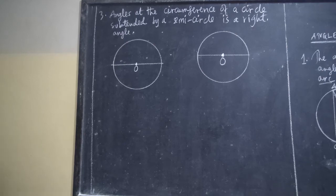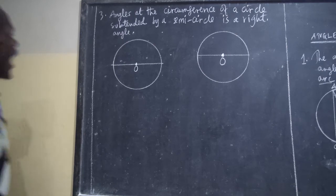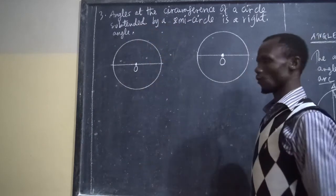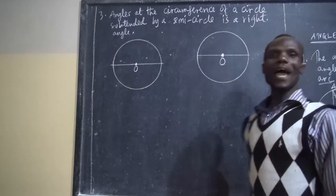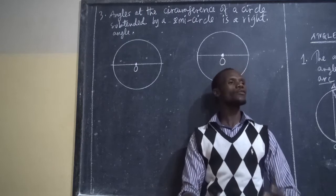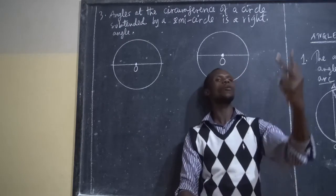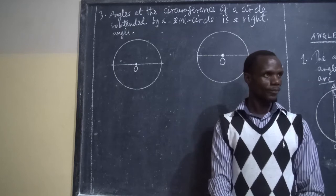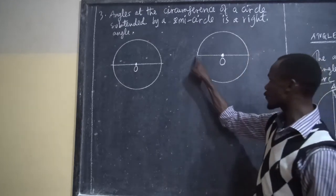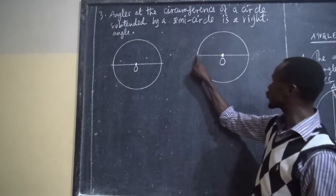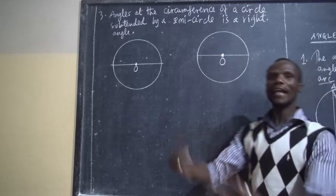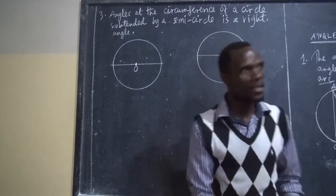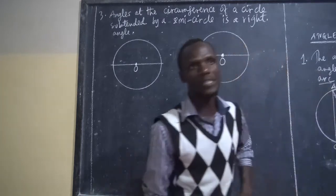A small note to tell you: angles at the circumference of a circle obtained by a semi-circle. The semi-circle is formed after you have divided your circle into two equal parts. When the chord passes from one point to the opposite point and divides your circle into two equal parts, those two equal parts are called semi-circles.